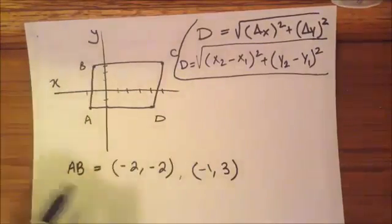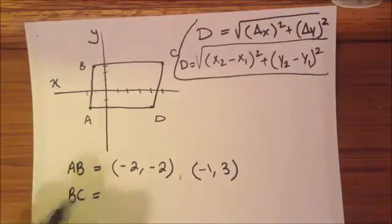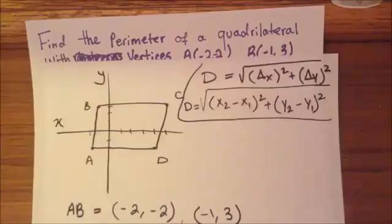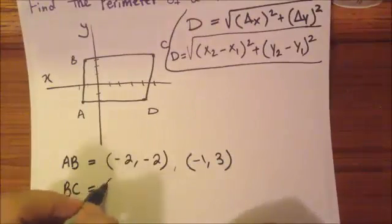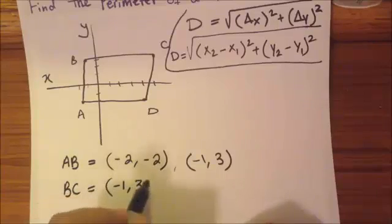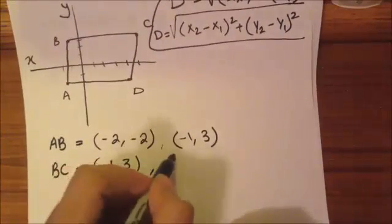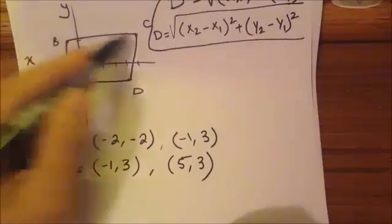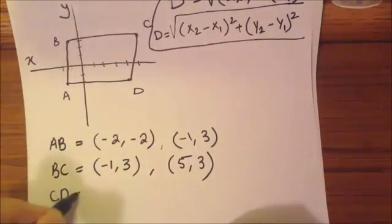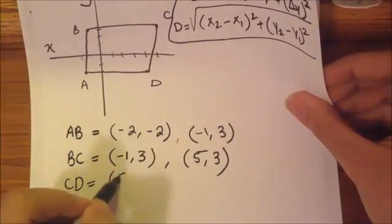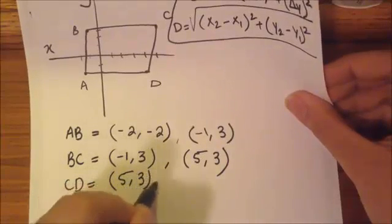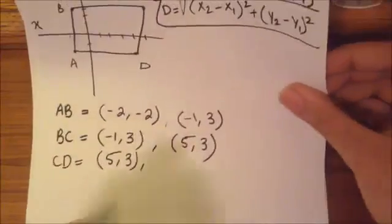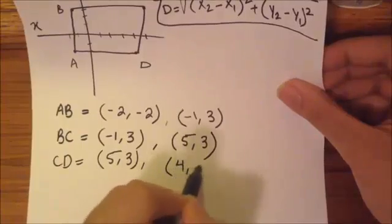Now we have to figure out line BC. For B, we have negative 1 and 3, and for C we have 5 and 3. Now for point CD: the coordinate for C is 5 and 3, and D is 4 and negative 2.